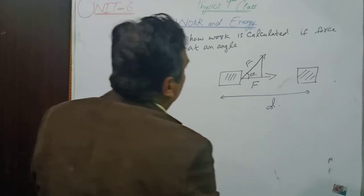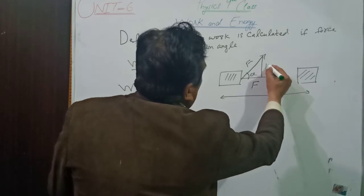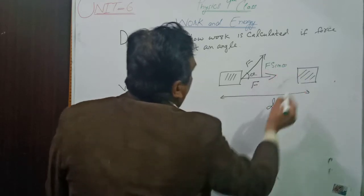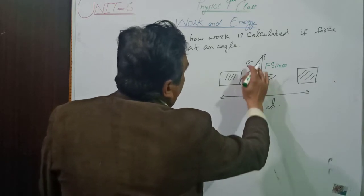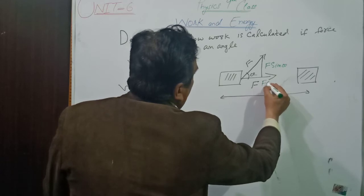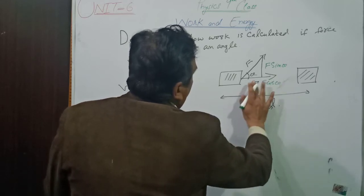One is vertical component, F sin theta, and the other is horizontal component, F cos theta.